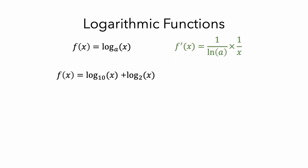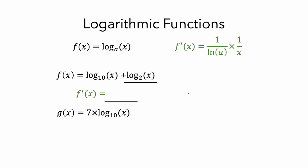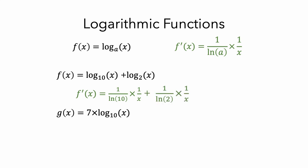Here are two examples. Take a minute to think about for which of these we can use the rule for logarithmic functions. Like with the power rule, you can take the derivative of two log functions that are added together. The base of the first is 10 and the base of the second is 2, so you get 1 over the natural log of 10 times 1 over x, plus 1 over the natural log of 2 times 1 over x. Also like with the power rule, you can multiply the derivative of log base 10 of x by the coefficient. The base is 10 and the coefficient is 7, so you get 7 times 1 over the natural log of 10 times 1 over x.